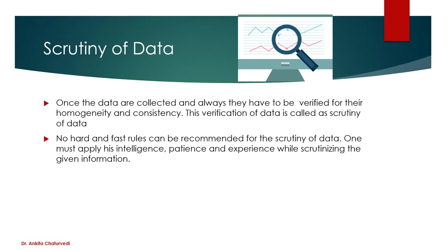Coming to scrutiny of data. When you collect data, you need to check and scrutinize it before using it — because some data may be missing, answers may be wrong, data may be skewed, or there may be no normality, variation, or homogeneity. Once data are collected, they must be verified for homogeneity and consistency. This verification is called scrutiny of data. No hard and fast rules can be recommended — one must apply intelligence, patience, and experience while scrutinizing.